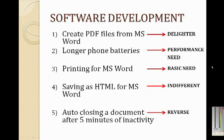Now let's look at some examples. The first one is creating PDF files from Microsoft Word — this can be a delighter. If when we ask how they feel if the feature is included and they choose 'like' as the answer, and when we ask how they feel if the feature is not included and they choose 'neutral' as the answer, it is classified as a delighter.